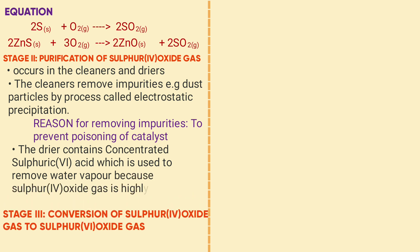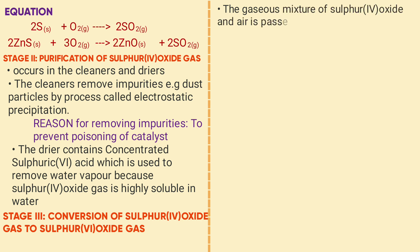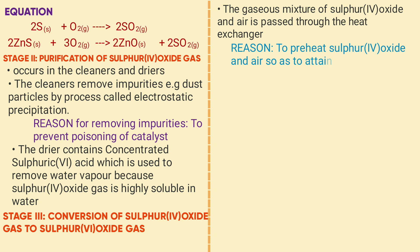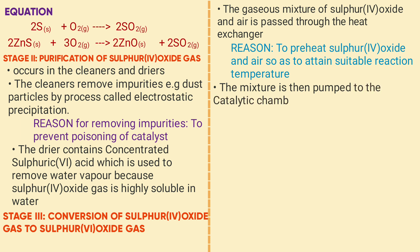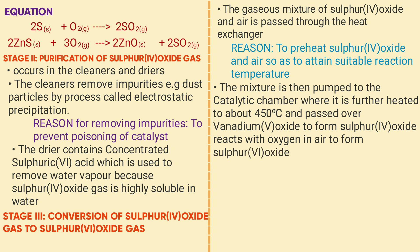Stage three is the catalytic conversion of sulfur dioxide (SO₂) to sulfur trioxide (SO₃). The gas mixture of SO₂ and air is first passed through the heat exchanger to preheat the mixture to a suitable reaction temperature. After preheating, the mixture is passed through the catalytic chamber where it is further heated to about 450°C and passed over vanadium pentoxide, where SO₂ reacts with oxygen to form SO₃. The equation is: 2SO₂ + O₂ → 2SO₃ + heat.